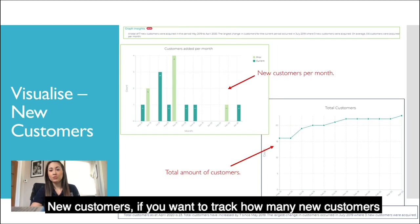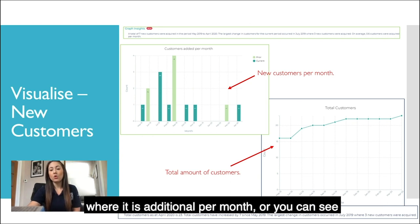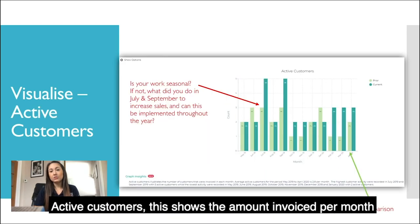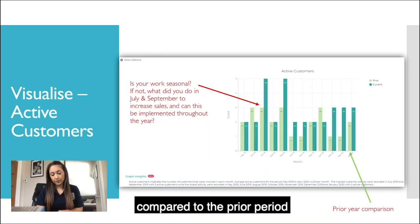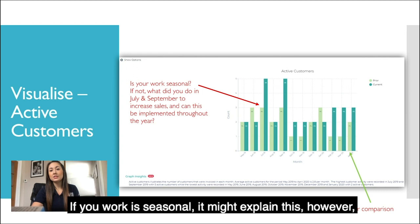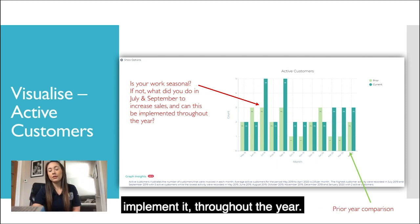For new customers, if you want to track how many new customers you're getting, you can see it here — either additional per month or the total amount of customers at the bottom. For active customers, this shows the amount invoiced per month compared to the prior period. July and September have particularly high invoices — if your work is seasonal it might explain this; however, if it's not, you might want to go back and check what you did in those months and see if you can implement it throughout the year.